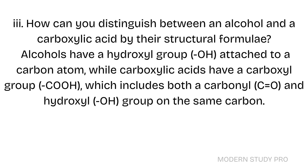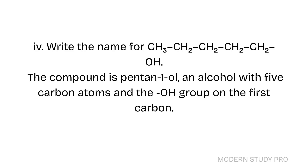Short Question 3: How can you distinguish between an alcohol and a carboxylic acid by their structural formulae? Alcohols have a hydroxyl group (OH) attached to a carbon atom, while carboxylic acids have a carboxyl group (COOH), which includes both a carbonyl (C=O) and hydroxyl (OH) group on the same carbon. Short Question 4: Write the name. The compound is pentan-1-ol, an alcohol with five carbon atoms and an OH group on the first carbon.